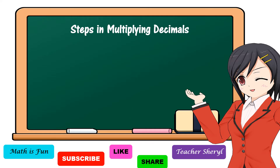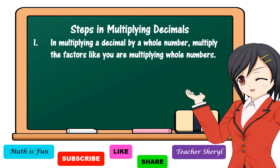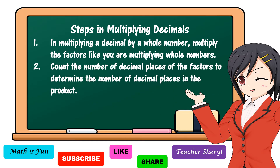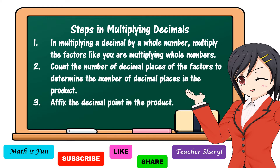These are the steps in multiplying decimals. Number one, in multiplying a decimal by a whole number, multiply the factors like you are multiplying whole numbers. When we say factors, these are numbers to be multiplied. Next, count the number of decimal places of the factors to determine the number of decimal places in the product. When we say product, it is the answer of multiplication. And lastly, affix the decimal point in the product.